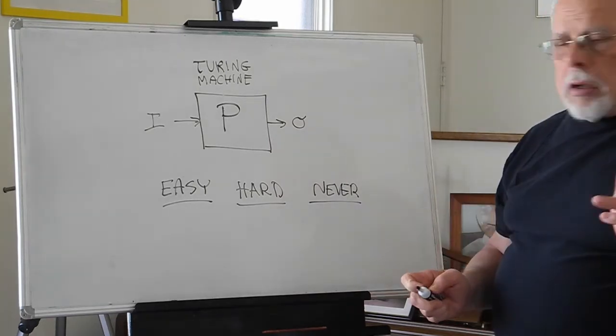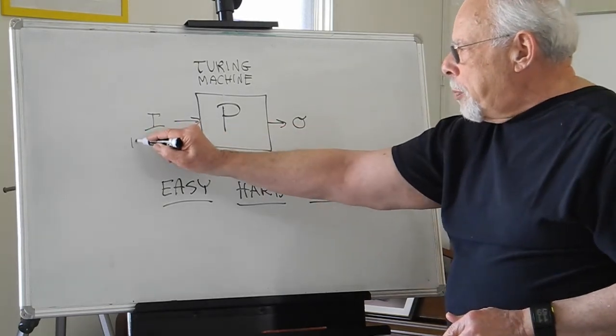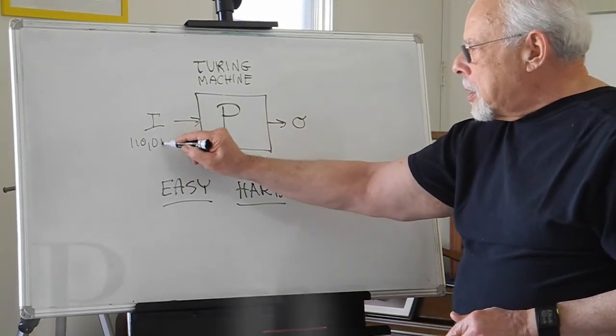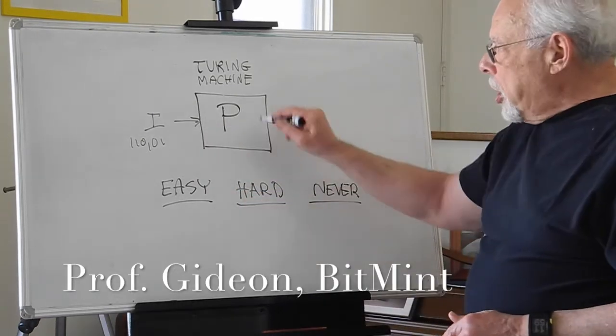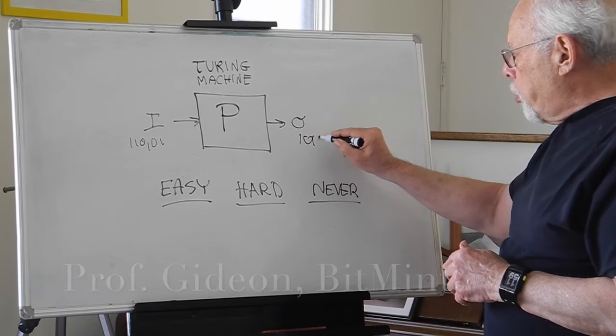Alan Turing described a machine where you have an input, a string of bits, the machine has a program built into it, and it comes up with an output, another string of bits.